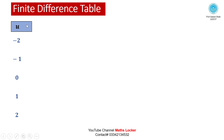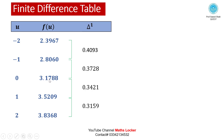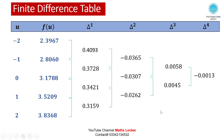Building the finite difference table with u in the first column and f(u) in the second column. Taking the first differences: 2.8060-2.3967, 3.1788-2.8060, 3.5209-3.1788, 3.8368-3.5209. Then taking the second, third, and fourth differences. Mark the value 0.2, which lies in the interval between 0 and 1, near the center at 0. We draw the diagonals in the finite difference table.